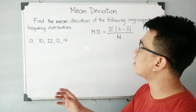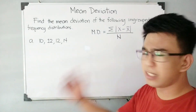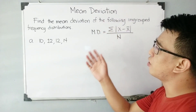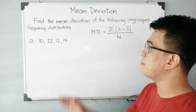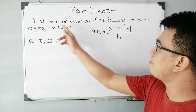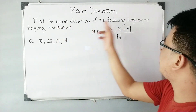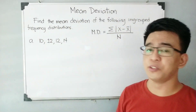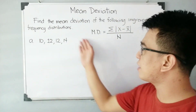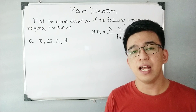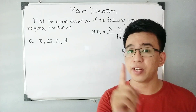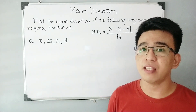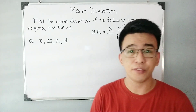The topic here in FocusNet is all about the mean deviation. We are given the problem: find the mean deviation of the following ungrouped frequency distributions. We have example number 1, and later on I'll be giving you another example for you to practice more about the mean deviation of ungrouped data.